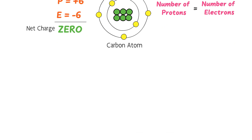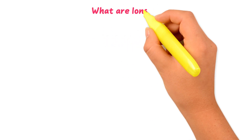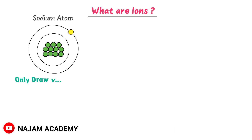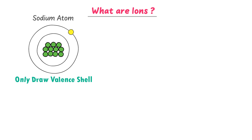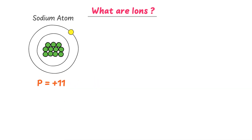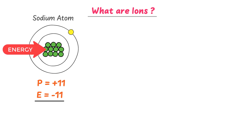Now what are ions? Consider an atom of sodium — remember that I only draw the valence shell of sodium. If you count the total number of protons and electrons in the sodium atom, you will get proton = +11 and electron = -11. We know from the previous example that they both cancel out themselves, and the atom is thus a neutral particle.